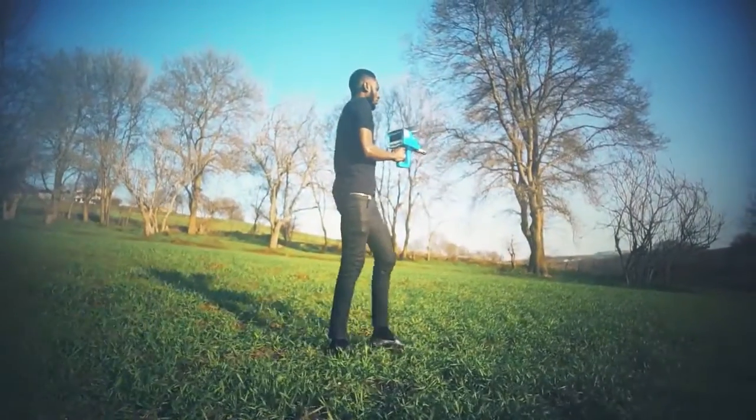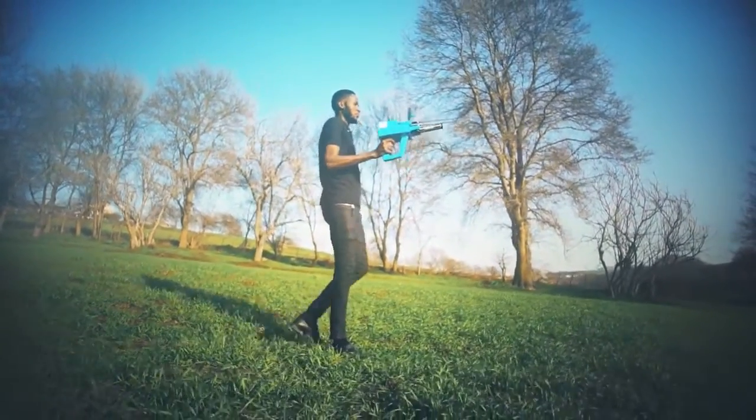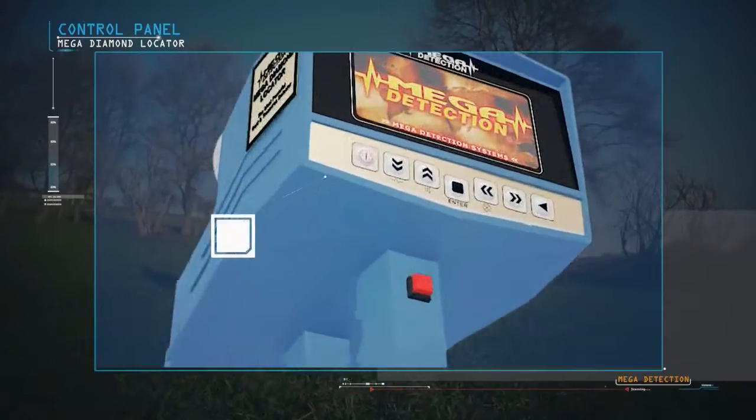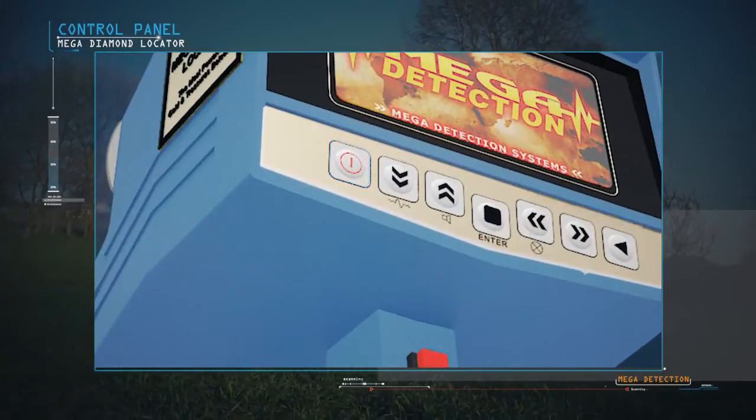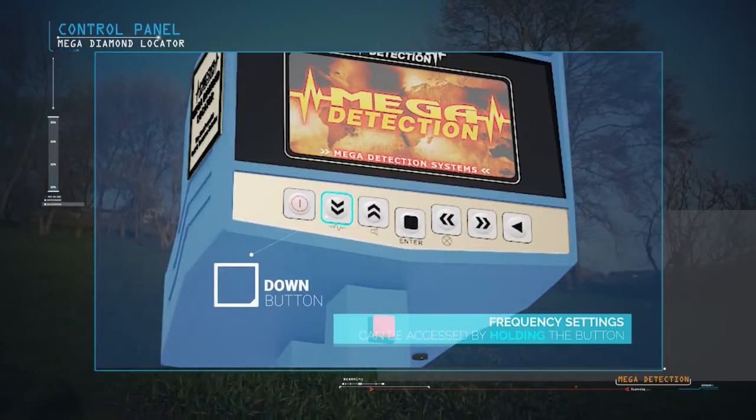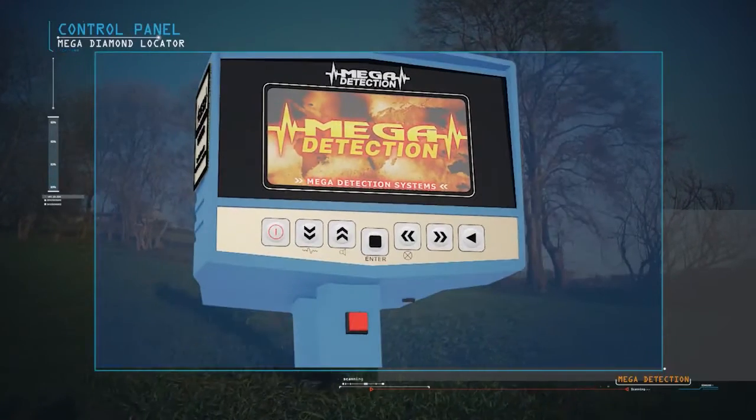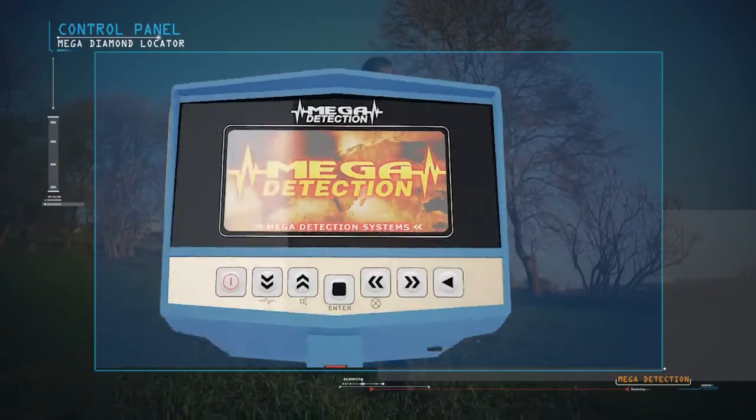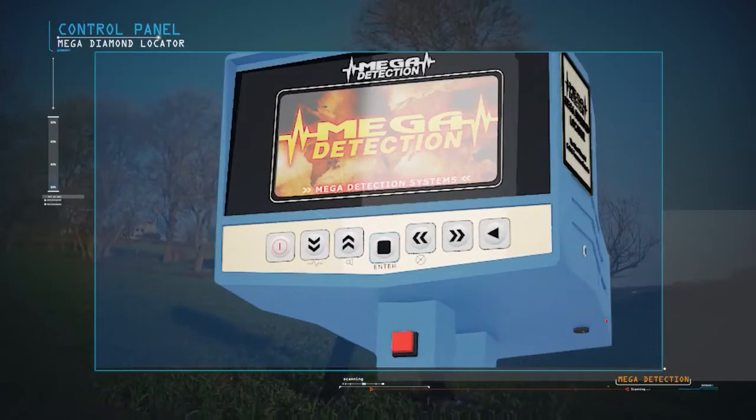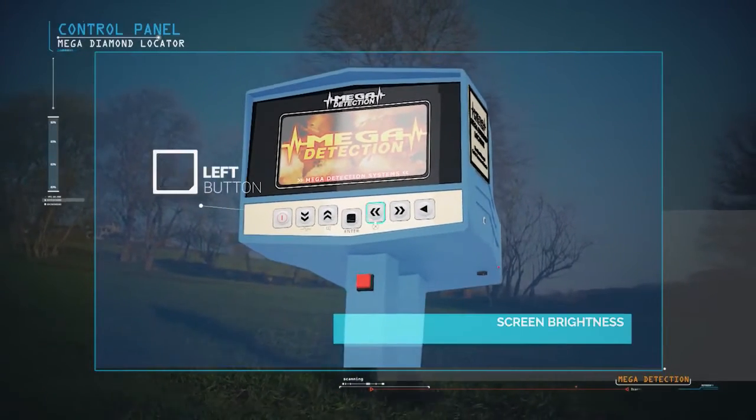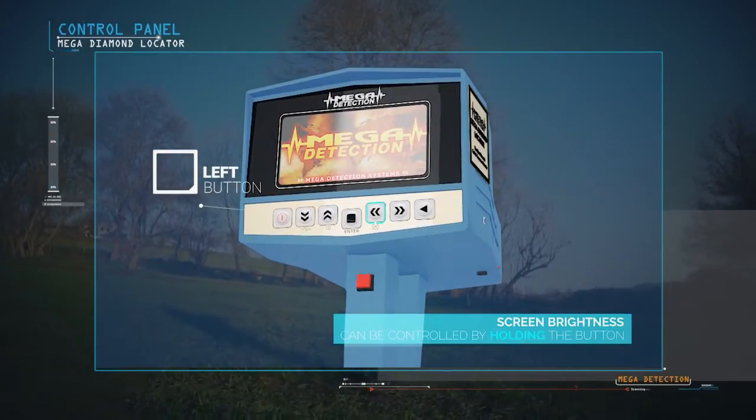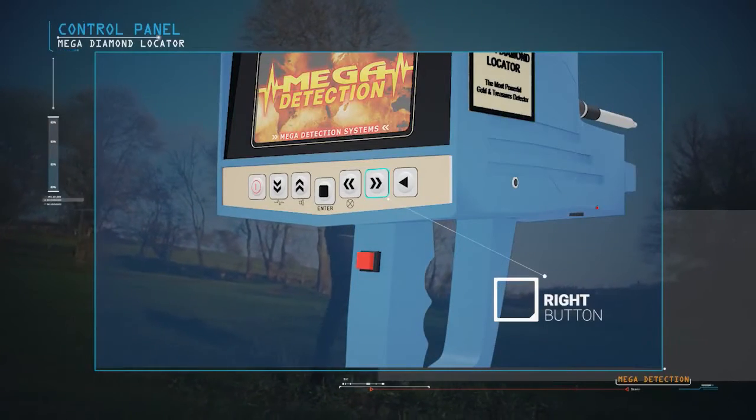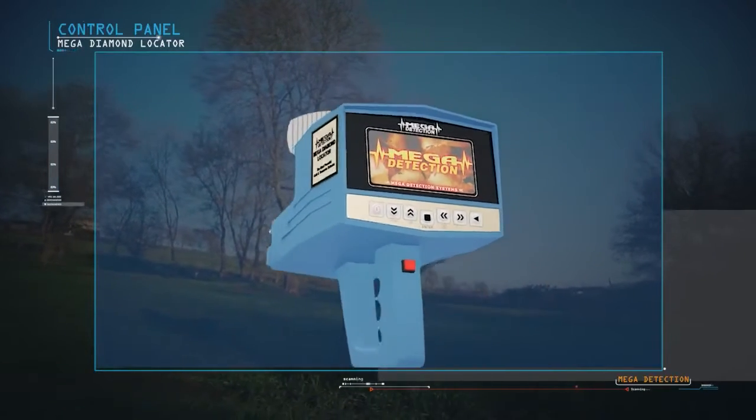Control panel explanations: On-off button. Down button - the frequency setting can be accessed by pressing and holding the button. Up button - sound can be muted by pressing and holding the button. Enter or selection button. Left button - the screen brightness can be controlled by pressing and holding the button. Right button. Back button to the previous menu.